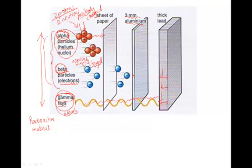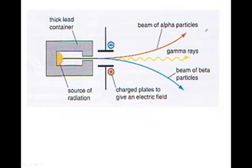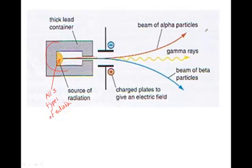The charge of these particles affects some of their properties. If we have a lead container with radioactive material inside giving off all three types of radiation, and we pass this radiation through an electric field — with a negatively charged electrode on one side and a positively charged electrode on the other — the electric field will affect the three different types in different ways.